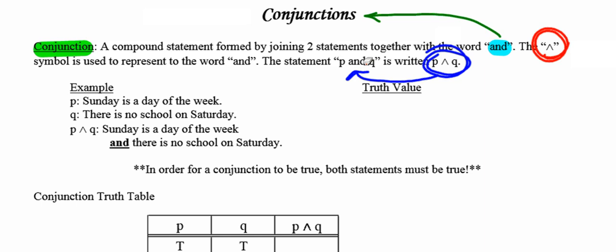Let's take a look at an example. P represents the statement 'Sunday is a day of the week,' and Q represents the statement 'there is no school on Saturday.' So P and Q, written in sentence form, would say: Sunday is a day of the week and there is no school on Saturday.